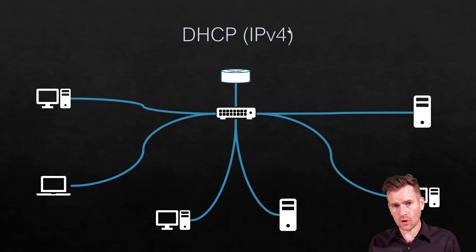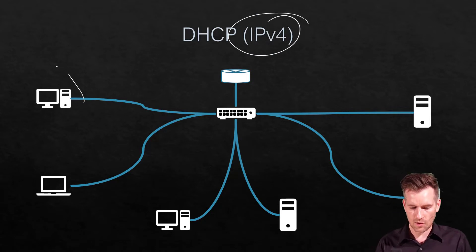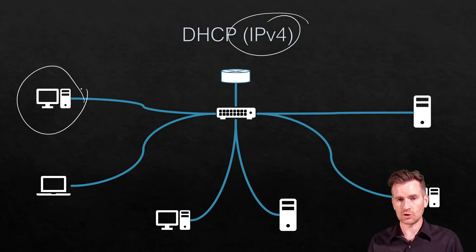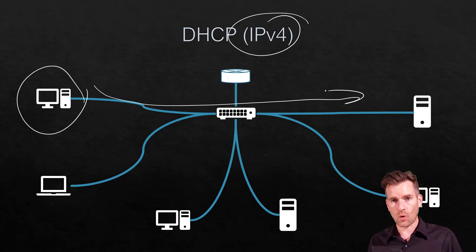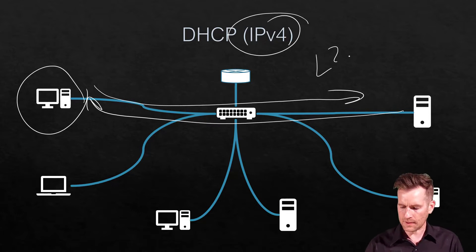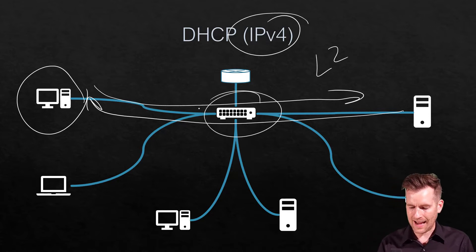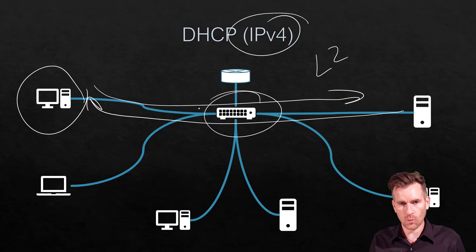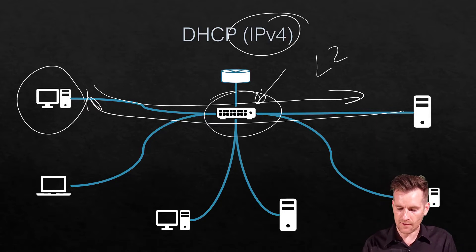DHCP is a protocol associated with IP version 4. It allowed a computer to attach to a network and then request an address — it would send out a broadcast, and then a DHCP server would provide that address. It happened all on layer 2 as a broadcast. Well, that's not going to work with IP version 6 because we don't have broadcasts in IP version 6.